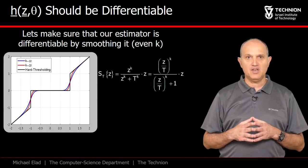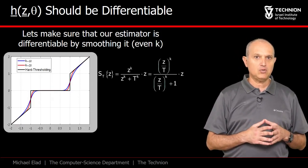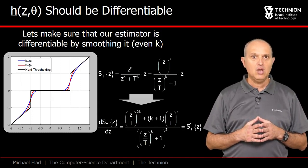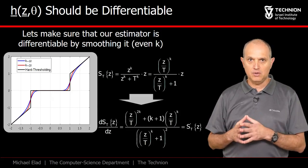When k is big enough, we get closer and closer to the ideal thresholding. Here is the derivative of this expression with respect to its input. We will need this shortly when using SURE.